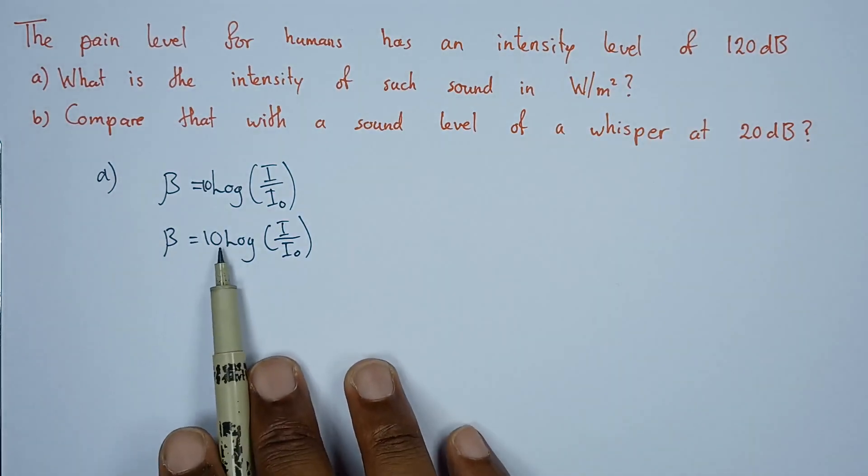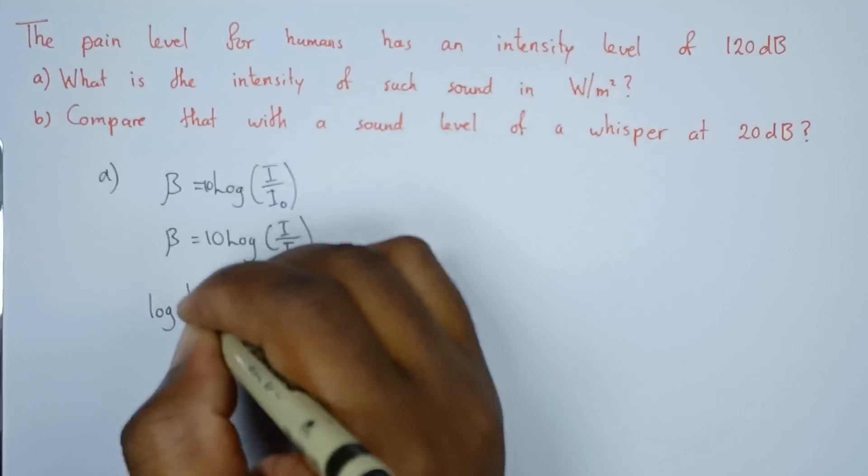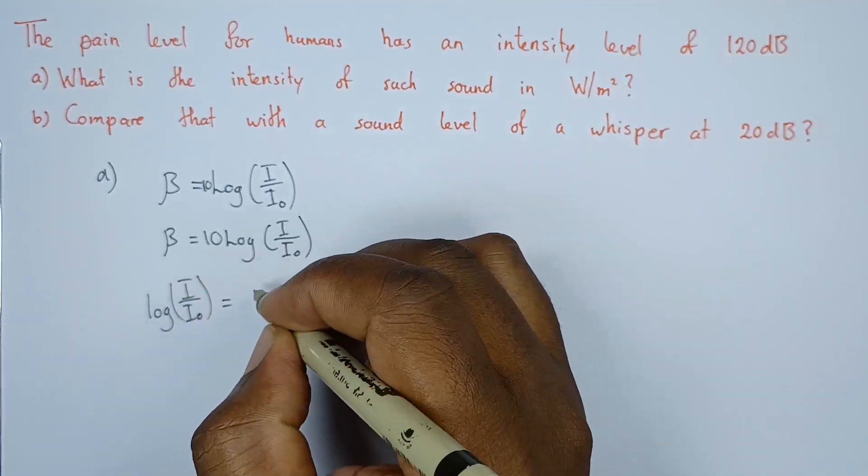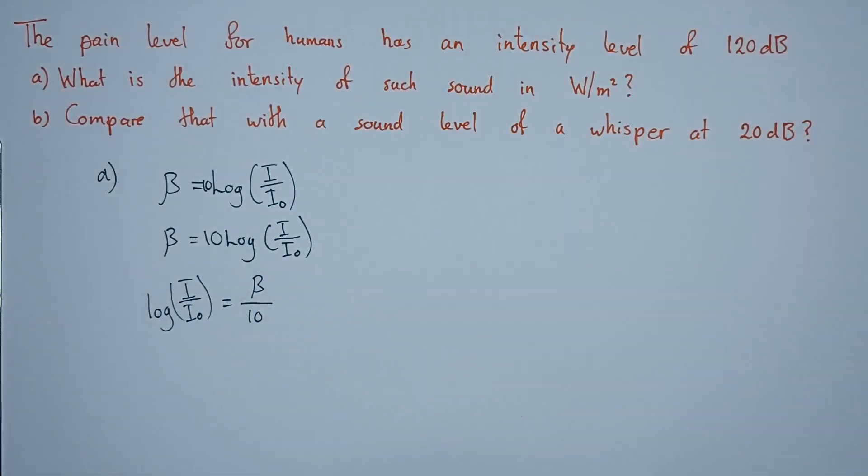To start with, we'll divide both sides by 10 so that we have log I over I naught equals the level over 10.